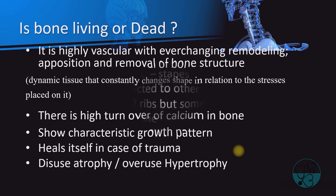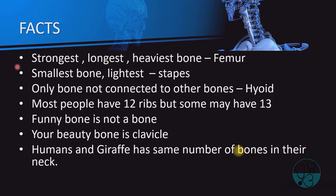Here are some interesting facts about bone. The femur is the longest, strongest, and heaviest bone in the human body — as hard as steel but not as strong as teeth. The smallest and lightest bone in the ear is called the stapes. The hyoid is a lonely bone not attached to any other bone. Normally there are 12 ribs, but some people have an extra pair called cervical ribs. The funny bone is not a bone but a nerve. The clavicle is also known as the beauty bone, and humans and giraffes have the same number of bones in their neck.